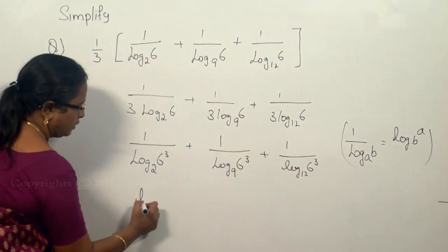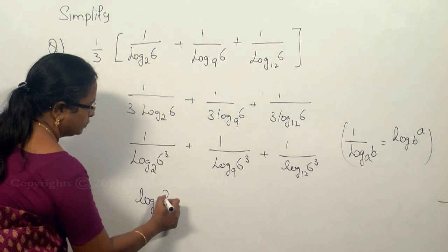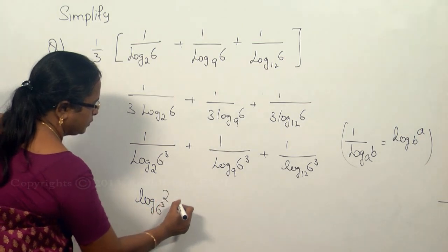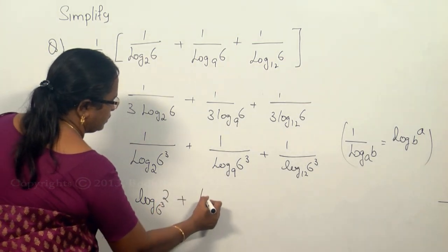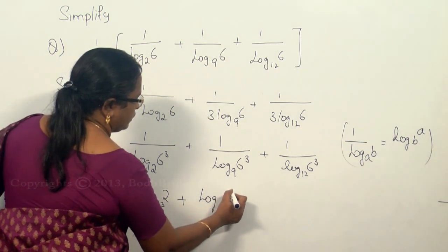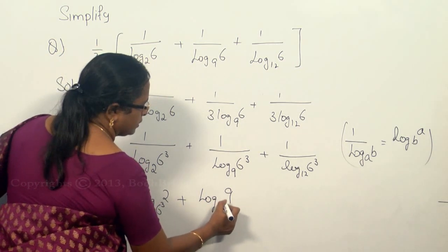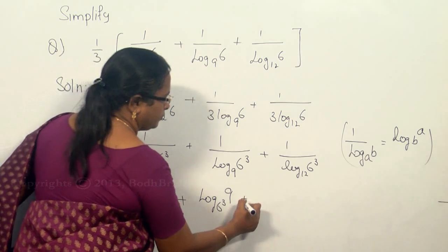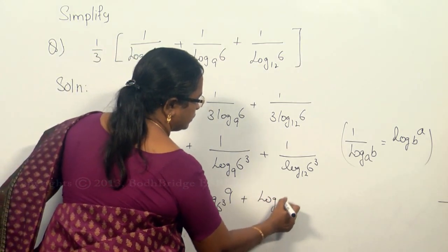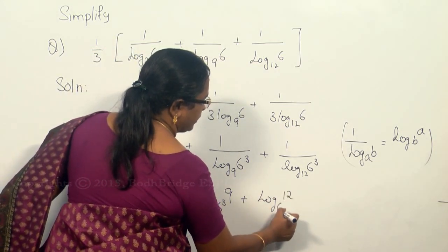Now this becomes log of 2 to the base 6 cube plus log of 9 to the base 6 cube plus log of 12 to the base 6 cube.